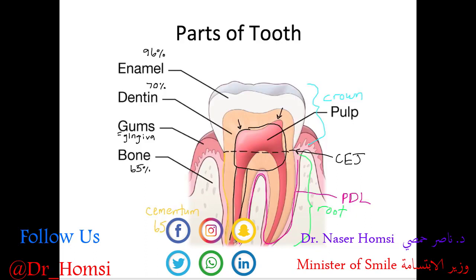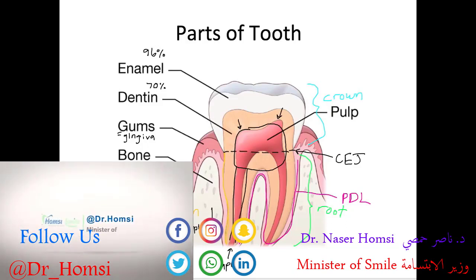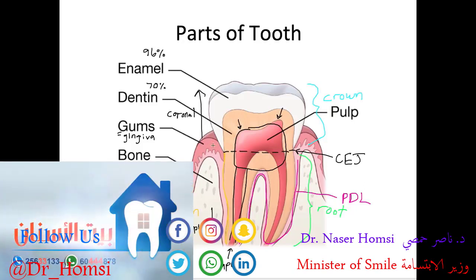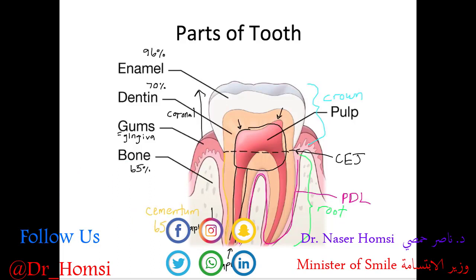One other structure: the tip of the root is called the apex. In directional terms, something located towards the root tip is in the apical direction, while moving towards the top of the crown is called the coronal direction. Sorry, that was a lot, but hopefully it's really useful information.